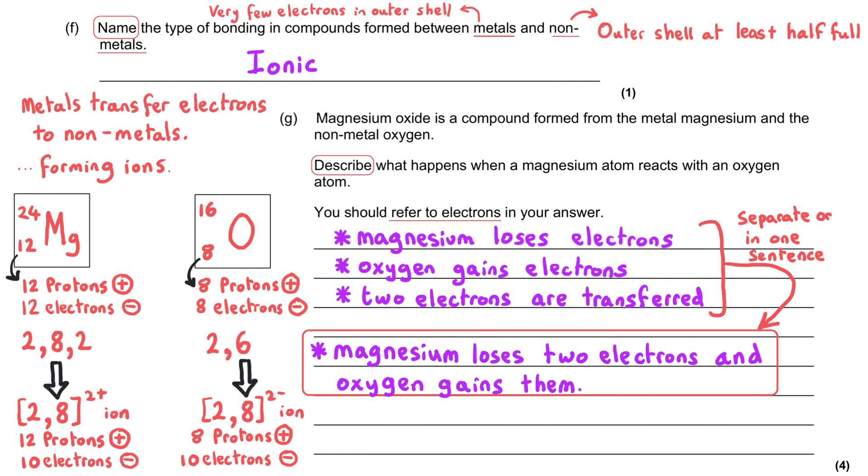And once we've got atoms that have lost electrons or gained electrons, they actually aren't atoms anymore. They become ions. And so for our fourth mark here, we could say that we form magnesium ions and oxide ions. Or we could actually say what the charges are. So we could say we've got a magnesium two plus ion, and we've got an oxide two minus ion.